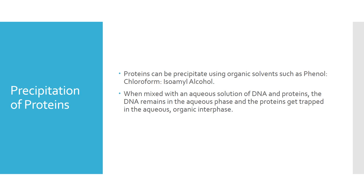The next procedure involves the precipitation of proteins which are associated with the DNA and with the cell itself. Proteins can be precipitated using organic solvents such as phenol, chloroform, and isoamyl alcohol. When proteins and DNA are mixed with these organic solvents, the DNA transfers to the aqueous phase, whereas the proteins transfer to the interphase. The aqueous phase can then be separated and transferred into a fresh test tube for precipitation.